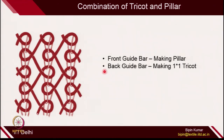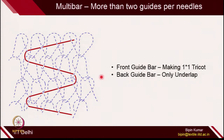Now let's see some combinations of fabric that can be generated. There are 2 guide bars providing yarn to individual needles. In one example, the front guide bar is making a pillar construction and the back guide bar is making a 1 cross 1 tricot. This is one of the simple 2 bar constructions combining tricot and pillar together. In another construction, the front guide bar is making 1 cross 1 tricot and the back guide bar is only doing underlap — shifting position without giving yarn to the needle.